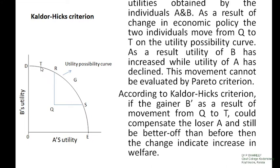We can see that point T is on the utility-possibility curve. Therefore, through the reallocation of income, it is possible to move from point T to point R or any other point on the utility-possibility curve. When we move from point T to point R, individual A's utility returns to its initial level, but individual B's utility is still higher than at point Q. That is, after compensating the loser A, the gainer B is still better off. Therefore, according to the Kaldor-Hicks criterion, the movement from Q to point T indicates an improvement in welfare.